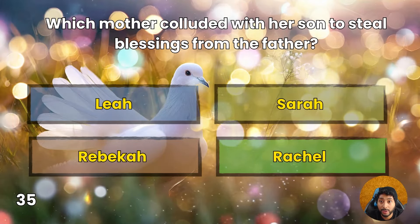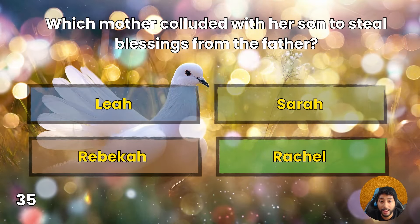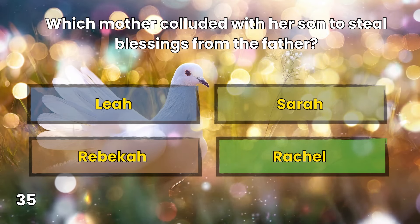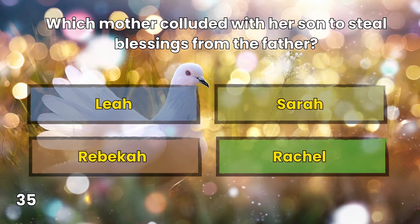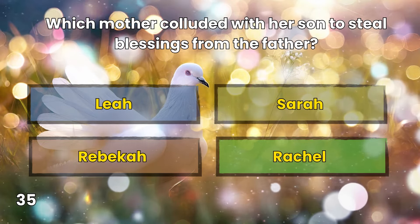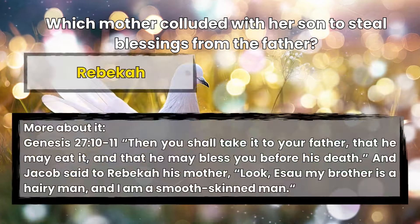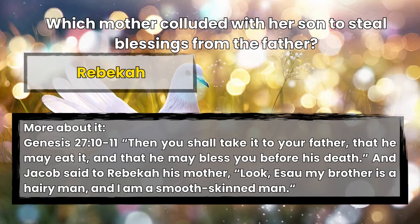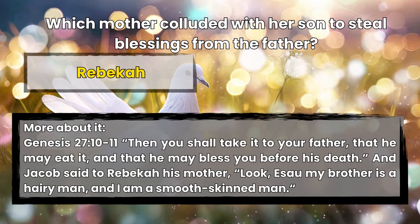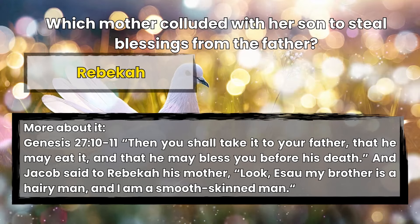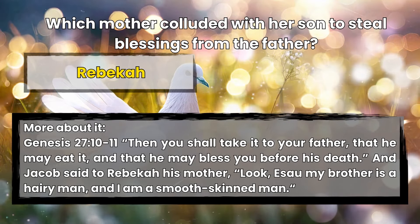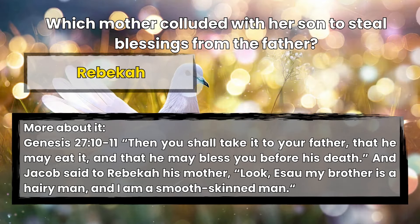Question 35: Which mother colluded with her son to steal blessings from the father? Leah, Sarah, Rebekah, or Rachel? Rebekah. Genesis 27:10-11 — 'Then you shall take it to your father, that he may eat it, and that he may bless you before his death.' And Jacob said to Rebekah his mother, 'Look, Esau my brother is a hairy man, and I am a smooth-skinned man.'